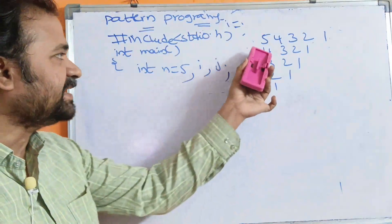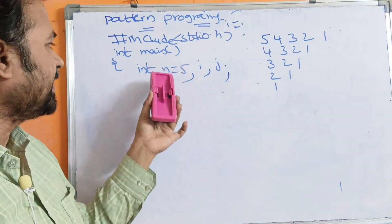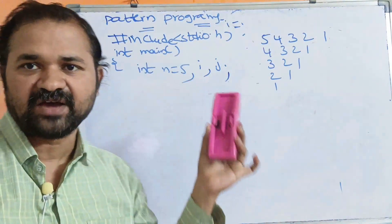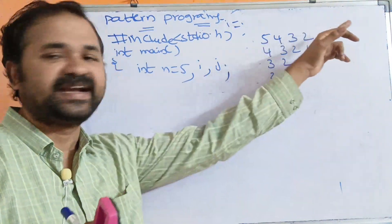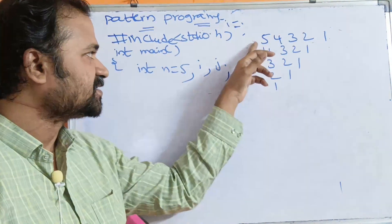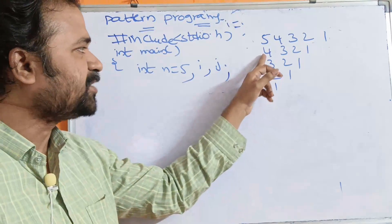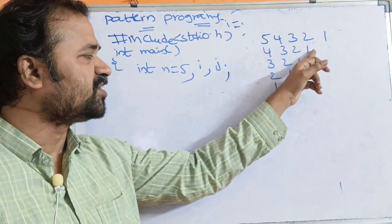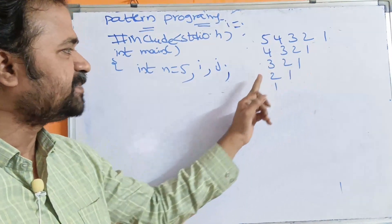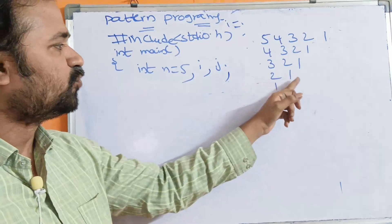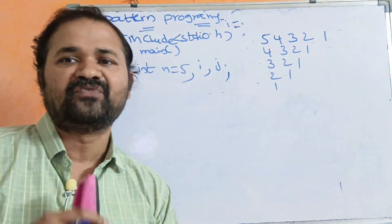Now we are going to display this pattern. n is equal to 5, which means it is displayed in 5 rows. The first row is 5, the second row is 4, the third row is 3, the fourth row is 2, and the fifth row is 1.